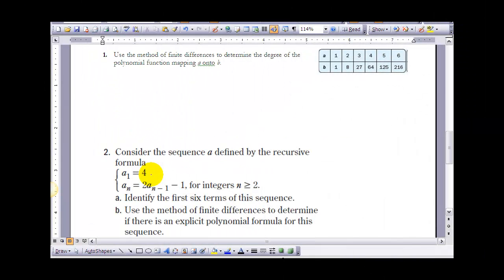Let's take a look at example 1 here. It says use the method of finite differences to determine the degree of a polynomial function mapping a onto b. So we have these values and what I want to do is I want to keep finding the differences between my b values until I get to the point where they're equal. Once I get to the point where they're equal, whatever level that is, whatever difference number that is, that's going to give me the degree of my polynomial.